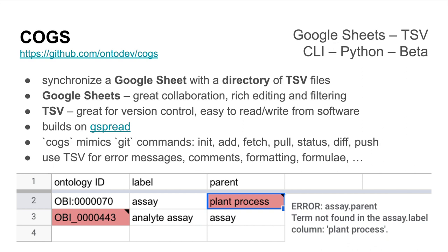On the table side, we have Cogs, which is used to synchronize a Google Sheet with a directory of TSV files. Each TSV file is one sheet in your Google Sheet. Google Sheets are great for collaboration, but TSVs are great for version control. So we built on a library called Gspread and mimicked the git interface for initializing, adding tables, fetching, pulling, getting their status, differences, and pushing them. We can also use TSV files for error messages, formatting, formulae, and need highlighting of errors that you might come across.